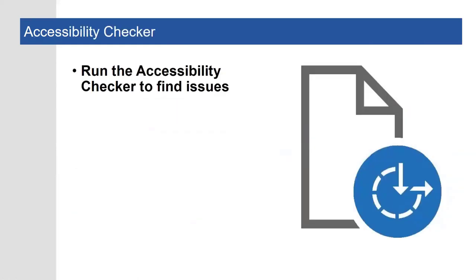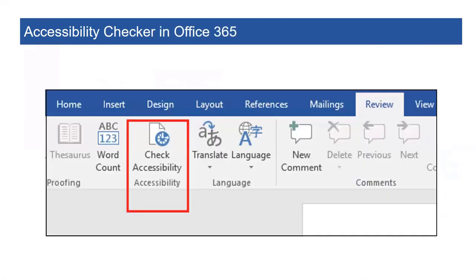The most powerful weapon in your Microsoft Word Accessibility Toolkit is the Accessibility Checker. The Accessibility Checker that's built into Microsoft Word finds accessibility issues in your Word documents. This tool is also present in PowerPoint, Excel, and Outlook on the Web. The Accessibility Checker generates a report of issues that could make your content difficult for people with disabilities to understand. We are going to use the Accessibility Checker to check a document that includes information about some of the traditions at the University of Alabama.